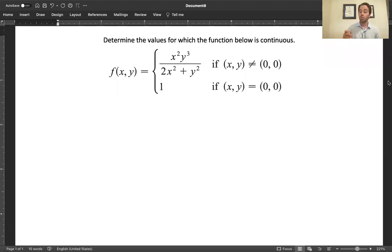We want to determine the values for which this function is continuous. What you should know from the very start is that because it is a rational function with a polynomial on the top and a polynomial on the bottom, every value within the domain of the main function is in the domain and is a point of continuity.